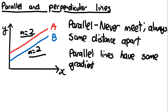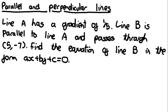It is very common in exams for you to understand how parallel lines work in terms of their gradients. For example, they could say line A has a gradient of 1/5 and line B is parallel to line A. Since line B is parallel to line A, the gradient of line B is also going to be 1/5.